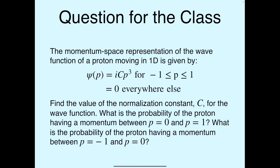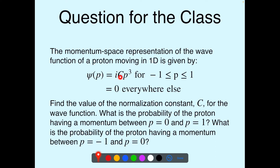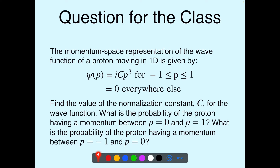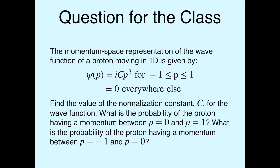Let's look at an example in momentum space. The wave function for a particle is psi of p equals i times c times p cubed, for momentum values between minus 1 and 1, and zero everywhere else. Find the normalization constant c, then find the probability of the particle having momentum between 0 and 1, and between minus 1 and 0. Pause the video, work it out, and then we'll go through it together.